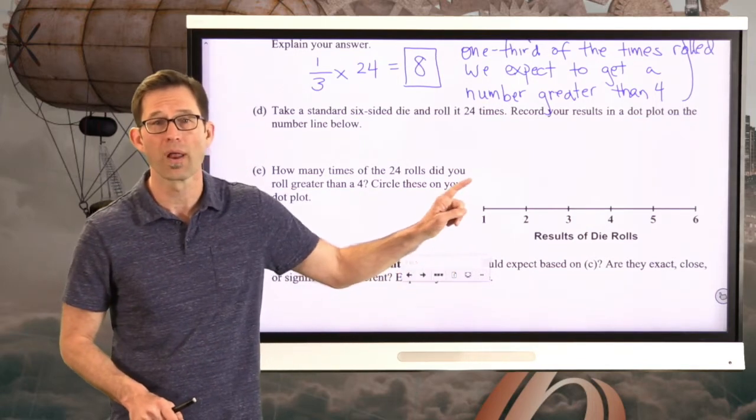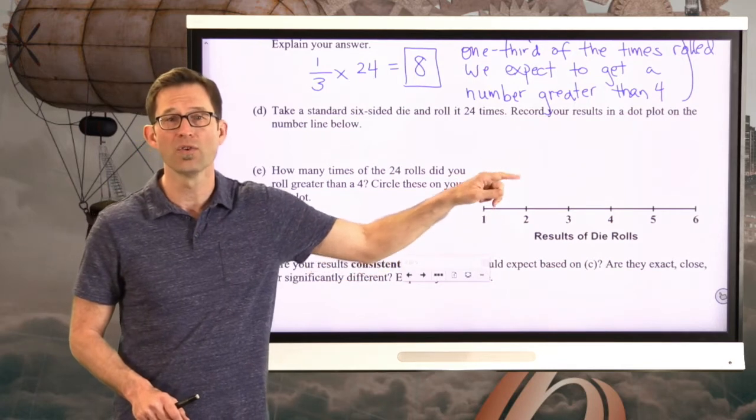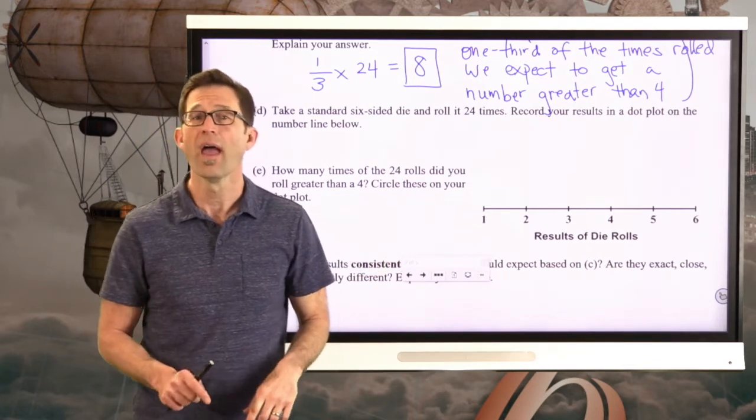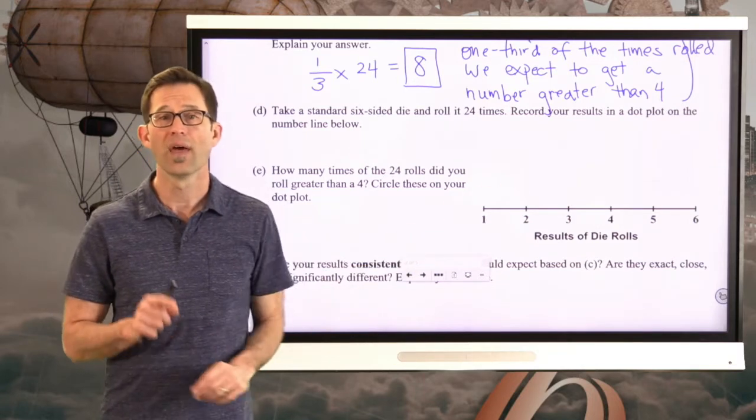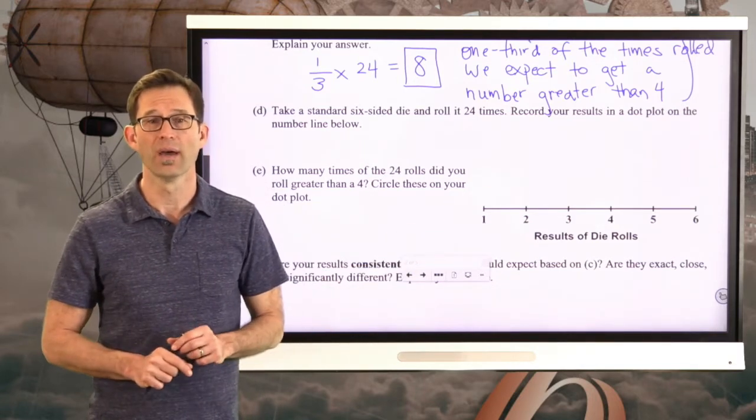If you're working with a partner, maybe you can roll, the partner can record, or vice versa. And just every time you get a 1, put another little dot above 1. Every time you get a 2, another dot above 2, etc. And then circle all of the rolls on your dot plot where you got greater than a 4. Pause the video now.